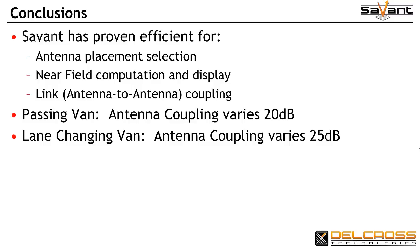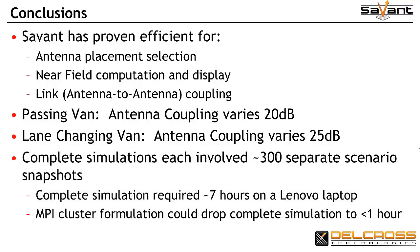These simulations demonstrate the dynamic nature of transmitter-to-receiver antenna coupling for vehicles on the roadway, and the nature in which these couplings can vary with other vehicles in the environment. Each animation that we showed involved about 300 separate Savant electromagnetic simulations.